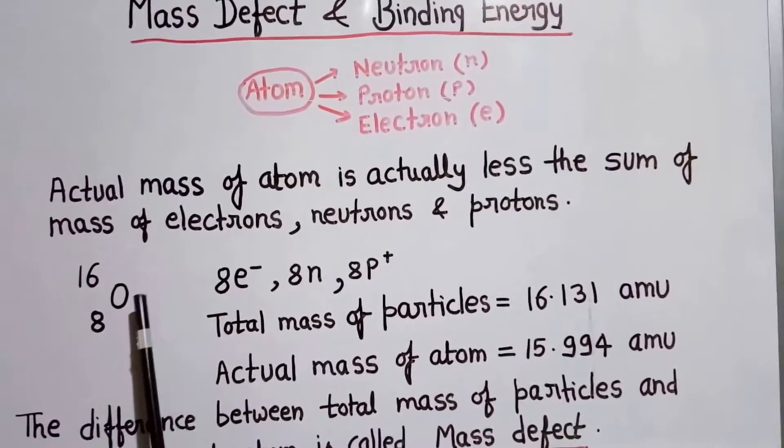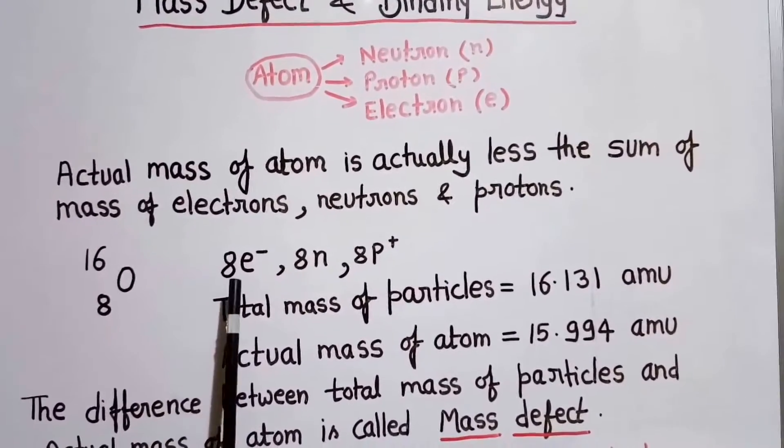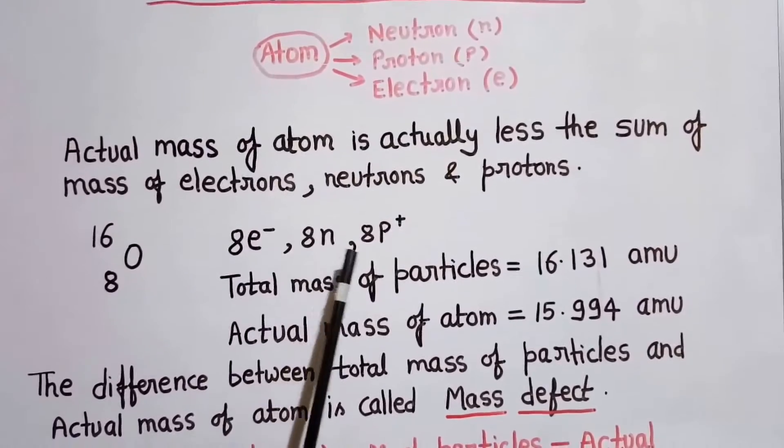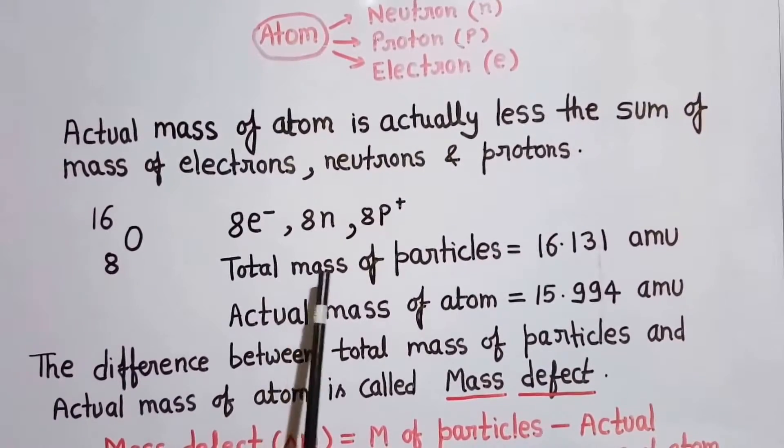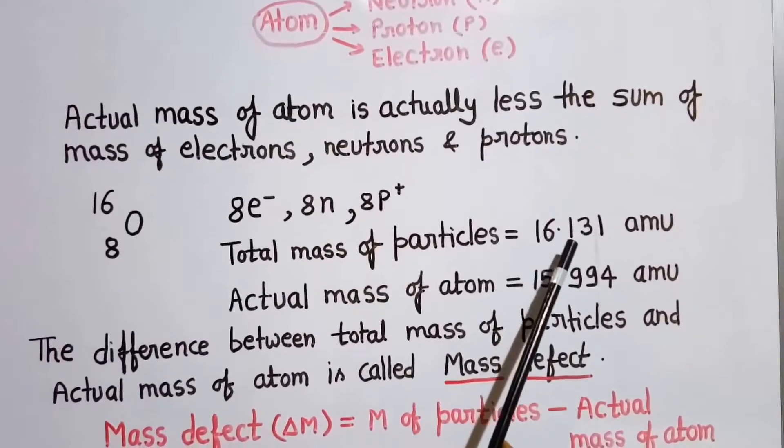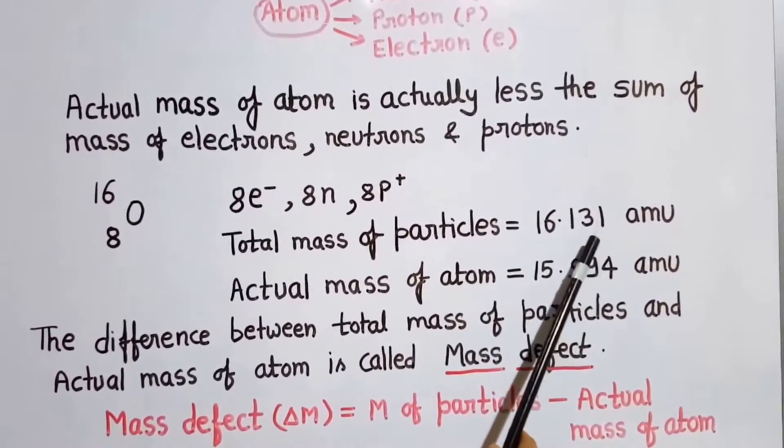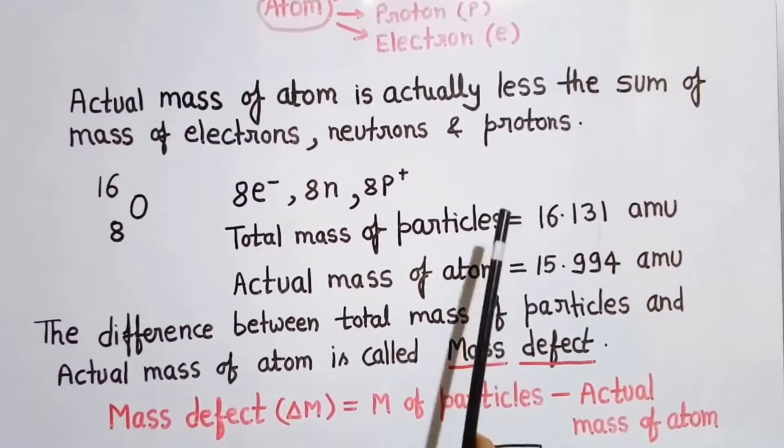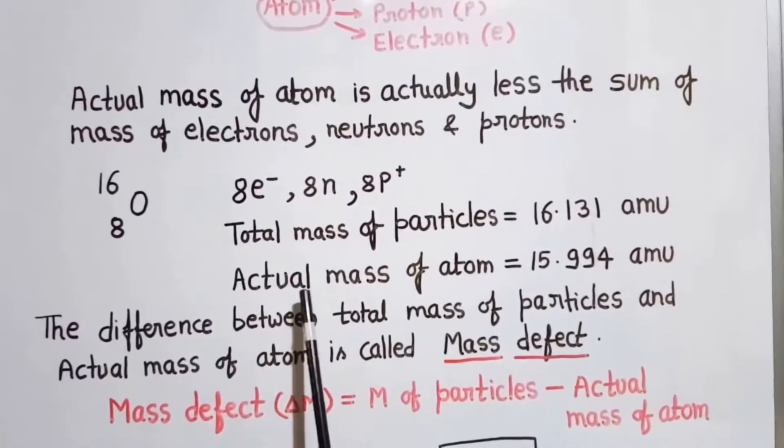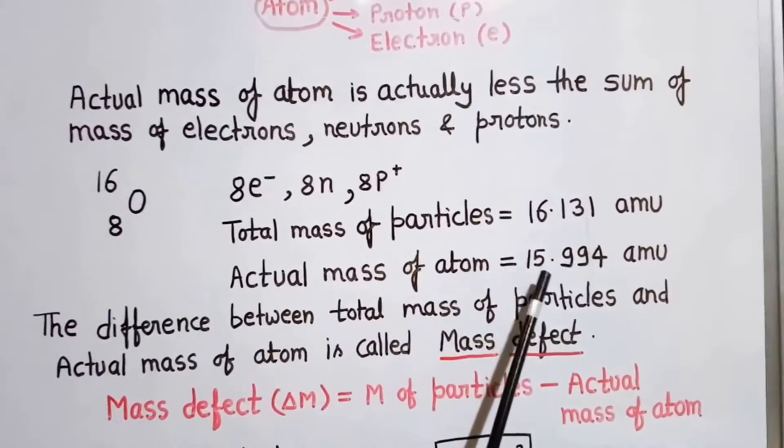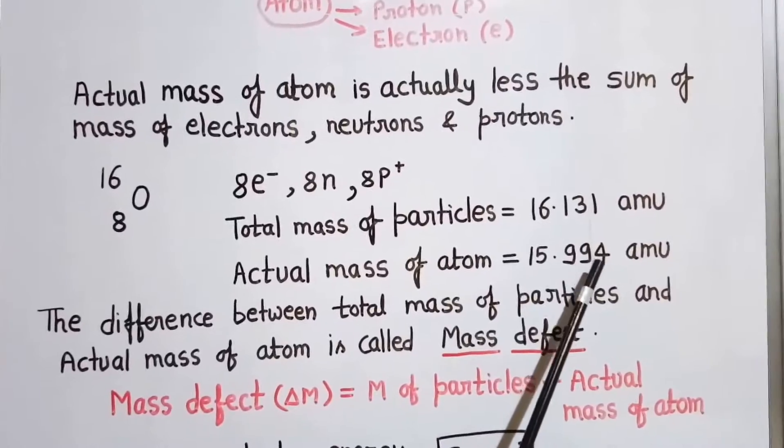For example, in the case of oxygen, there are 8 electrons, 8 neutrons and 8 protons. And the total mass of these particles is 16.131 amu. That should be the mass of the oxygen atom, but the actual mass of atom is 15.994 amu.